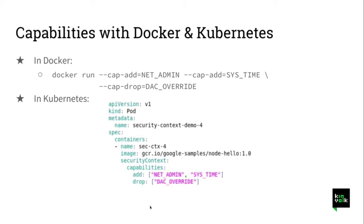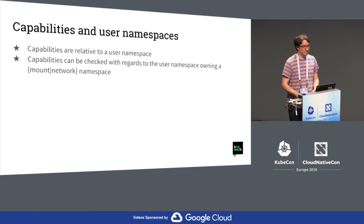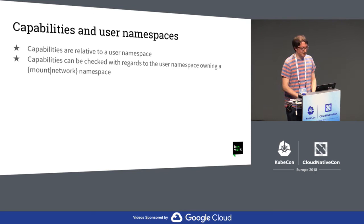Capabilities are related to the user namespace. On Linux, you can have capabilities related to one user namespace, but not to other user namespaces. User namespaces form trees. That's important for some other system calls.